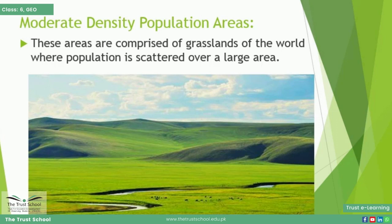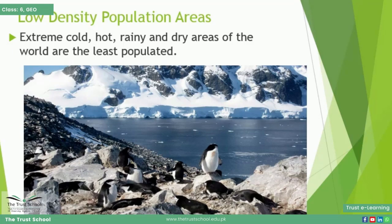The third category is low density population areas. Extreme cold, hot, rainy, and dry areas of the world are the least populated. The population density here is less than 10 persons per square kilometer.